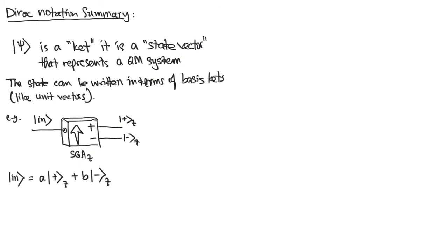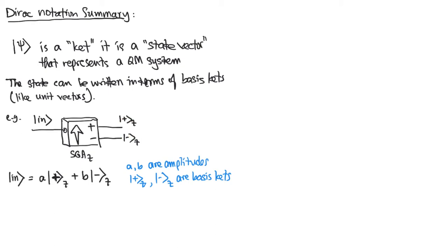We can write that input state as a linear combination of the basis kets plus-z and minus-z. Here, a and b are amplitudes, and plus-z and minus-z are basis kets — they're the basis states for the system. Since this is a two-state system with two possible outputs, we only need two basis kets, one to represent each possible state.